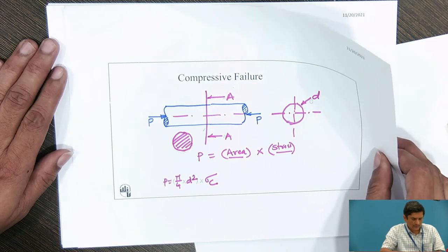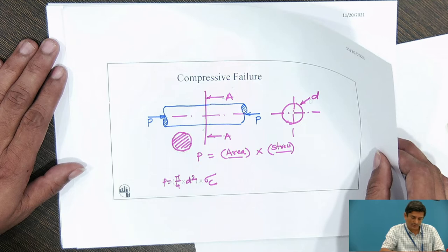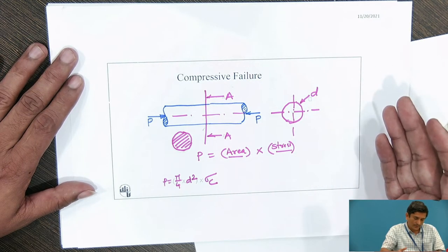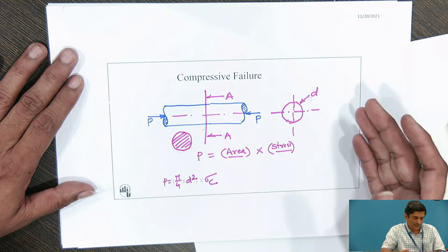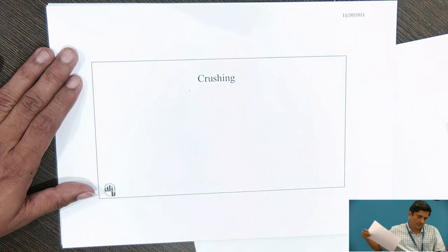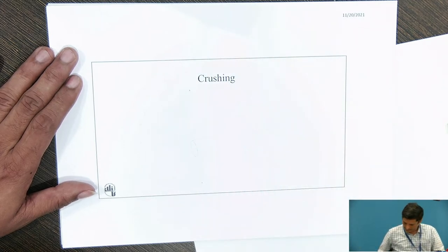These are the thumb rules. The failure needs to be very critically analyzed in order to confirm whether it is going to fail under tension, compression or shear. Let us move towards next part.